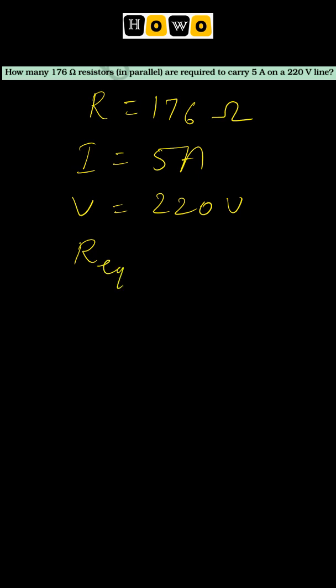Equivalent resistance can be calculated using Ohm's law, that is V upon I, and that is coming out to be 220 upon 5. So our equivalent resistance is coming out to be 44 ohms.